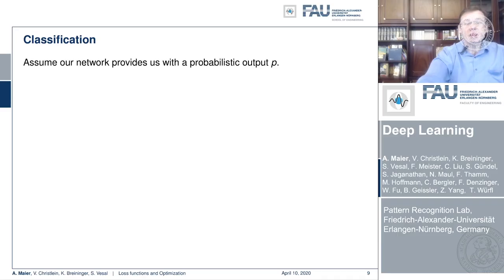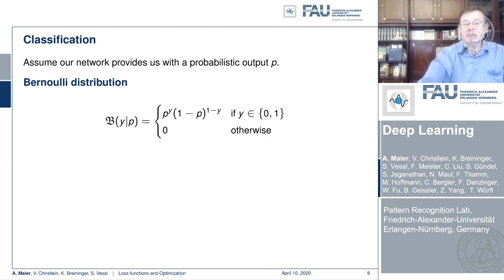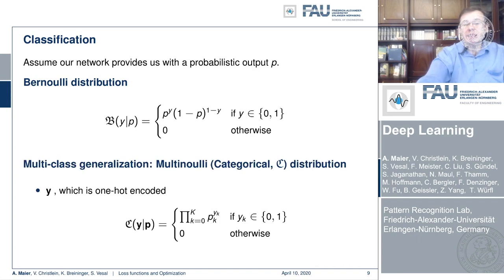Now let's assume that we want to classify. Then our network would provide us with some probabilistic output p. Let's say we classify only into two classes. Then we can model this as a Bernoulli distribution where we have the classes 0 and 1. Of course, the probability of the other class is simply one minus the probability, which would give us the probability distribution: p to the power of y times (1 - p) to the power of (1 - y). Typically we don't have only two classes, which means we need to generalize to...